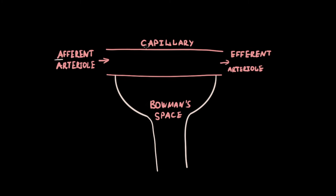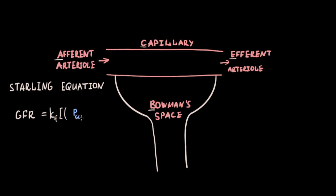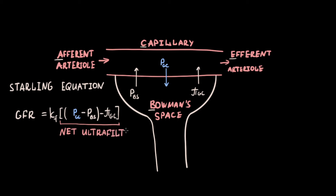The glomerulus has an afferent arteriole, glomerular capillary, efferent arteriole, and Bowman space. Glomerular filtration rate is described by the Starling equation, which includes the filtration coefficient and the algebraic sum of: hydrostatic glomerular capillary pressure (favors filtration, positive), hydrostatic pressure in Bowman space (negative), and oncotic pressure of the glomerular capillary (negative). Together these form net ultrafiltration pressure. For efficient filtration, hydrostatic pressure in the capillary must exceed both hydrostatic Bowman space pressure and oncotic capillary pressure.